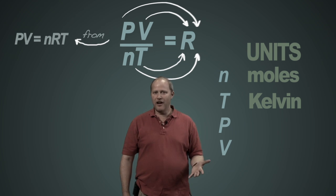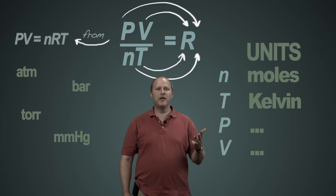But no one can decide what the units for pressure should be or the units of volume should be. And so as a result, for pressures, we have atmospheres, we have bars, we have torr, we have millimeter mercury, we have pounds per square inch, we have other crazy ones that we can dream up.